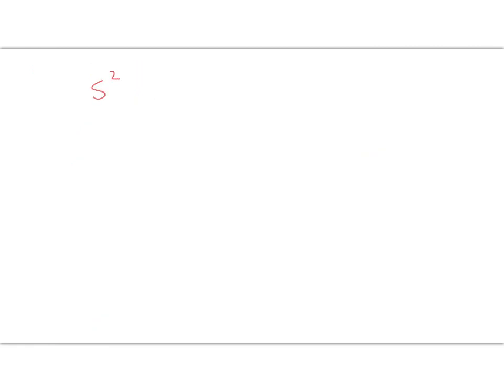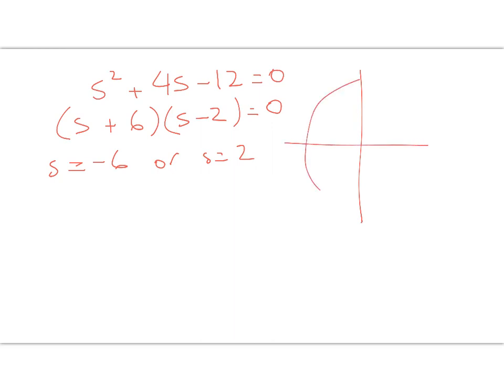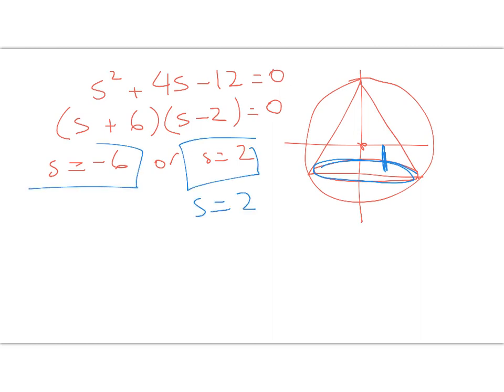We're very close to the end now. s squared plus 4s minus 12 equals zero factorizes very easily into s plus 6 and s minus 2. So s equals negative 6 or s equals 2. Here's my cross-section of my sphere and here's my cone. So our answer is s equals 2.